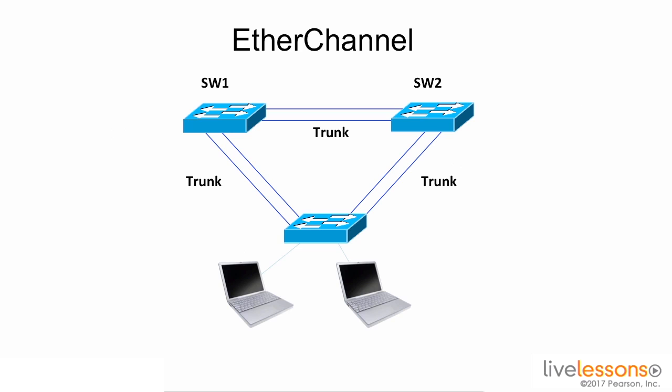In a modern day network, you may see multiple links going to multiple devices such as we have here. By using an EtherChannel, we can take these six links and actually turn them into three logical links. This would increase our availability and bandwidth in the network as well as reduce the number of links that are blocked by spanning tree in our environment.